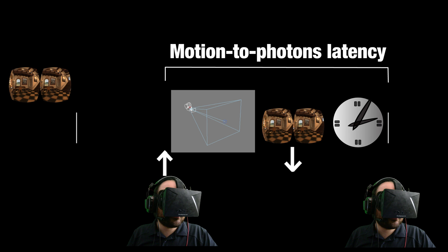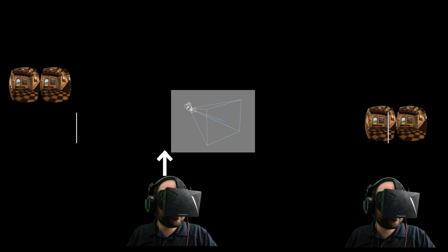The problem with this is that we're playing a game of chicken, because if we go into a scene where suddenly the complexity increases, that's going to increase our render time. And if our render time increases enough, we'll no longer be able to finish rendering before it's time for the refresh. As a result, we're going to drop a frame. The user's probably going to see the same frame they saw previously, and it's going to be a really bad experience.